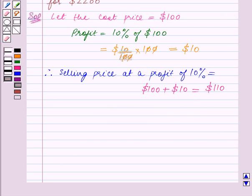So we can say that if selling price is $110 then cost price is equal to $100.